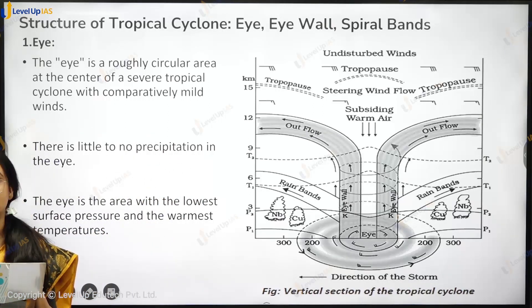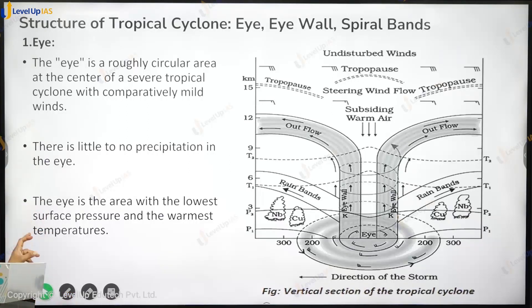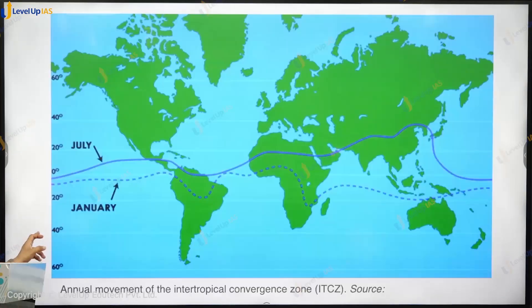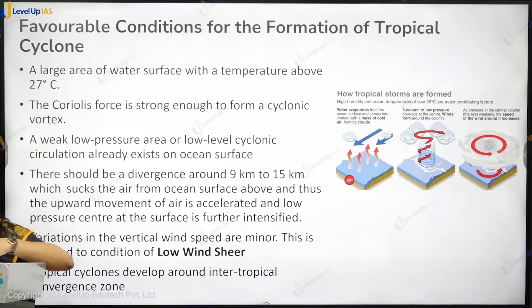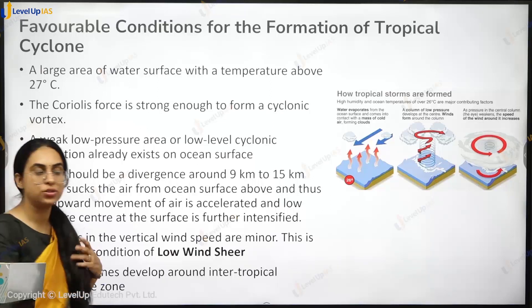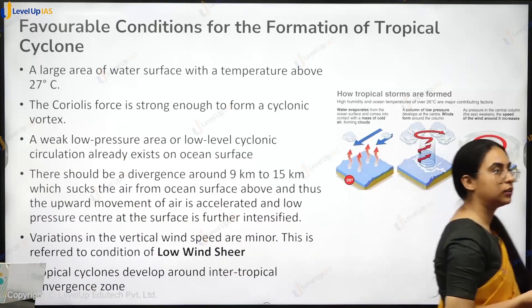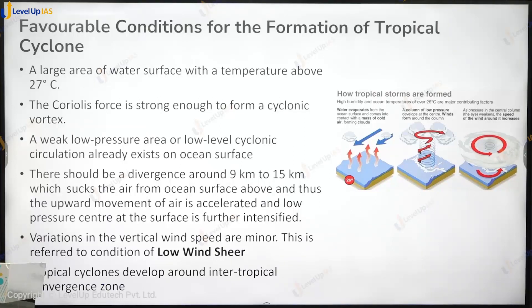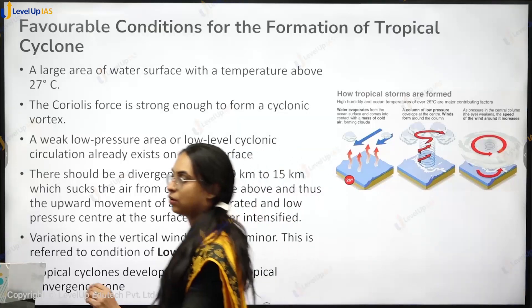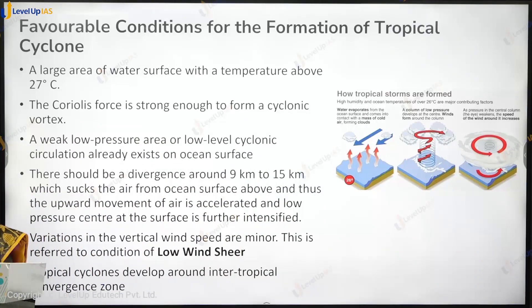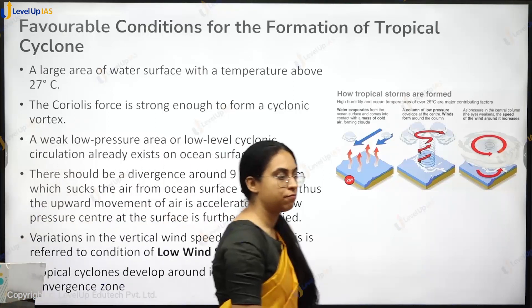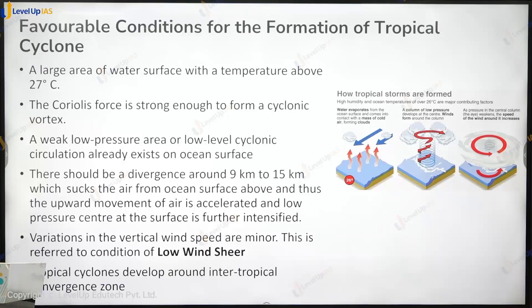The condition is that there should be divergence at around 9 to 15 kilometres, which sucks the air from the ocean surface above, and thus the low pressure at the surface is strengthened.